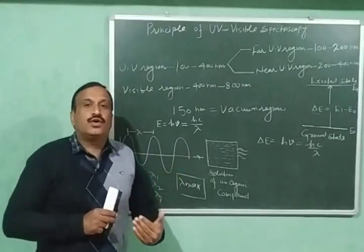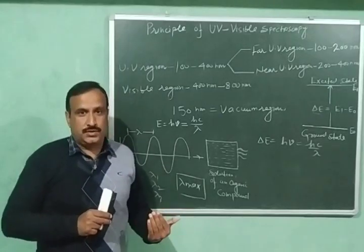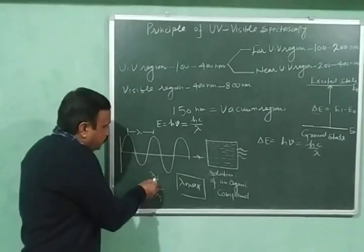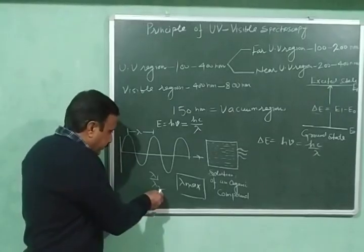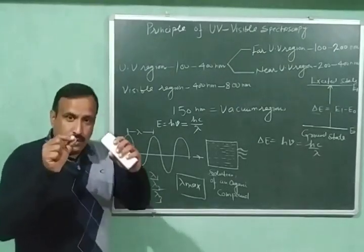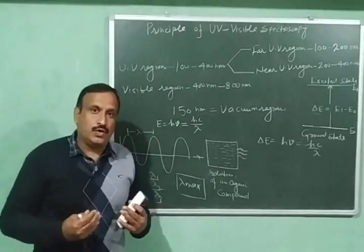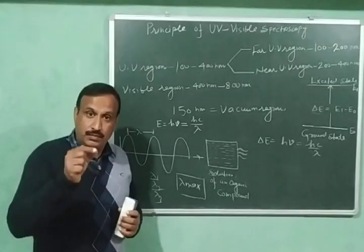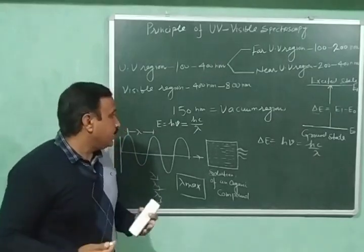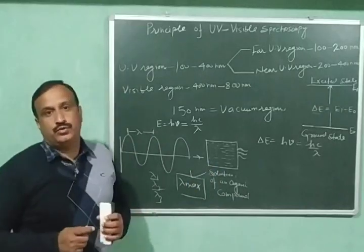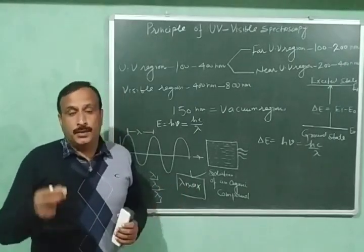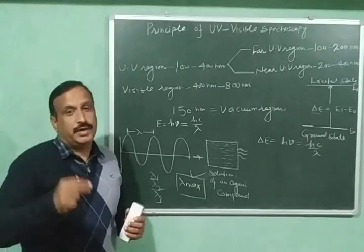In UV-visible spectroscopy, we pass different wavelengths one by one through the solution of an organic compound — lambda one, lambda two, lambda three, and so on. We then measure the absorbance of each wavelength. The wavelength which has maximum absorbance, or which is most absorbed by the organic compound, is called the lambda maximum (λmax) of that compound. This λmax is characteristic of that organic compound, and with its help we determine the structure of the compound.